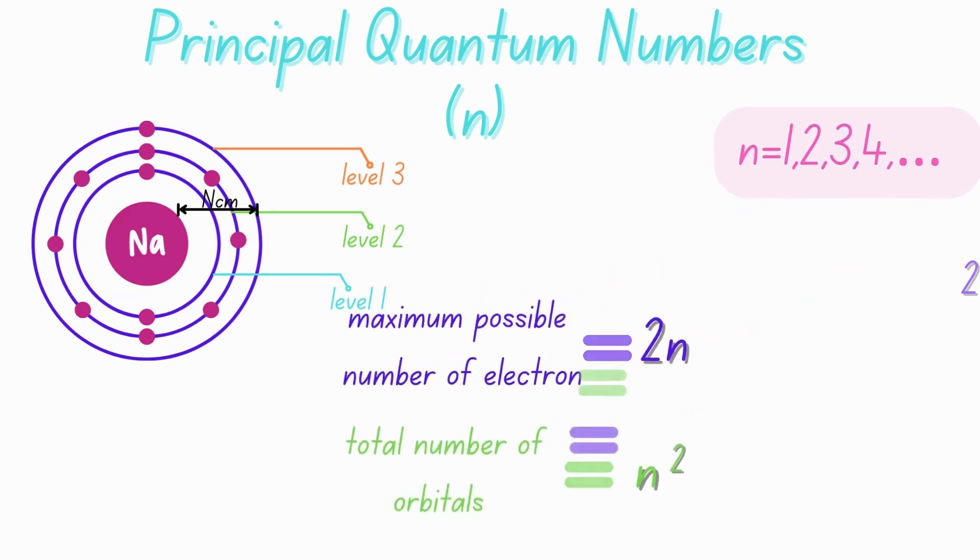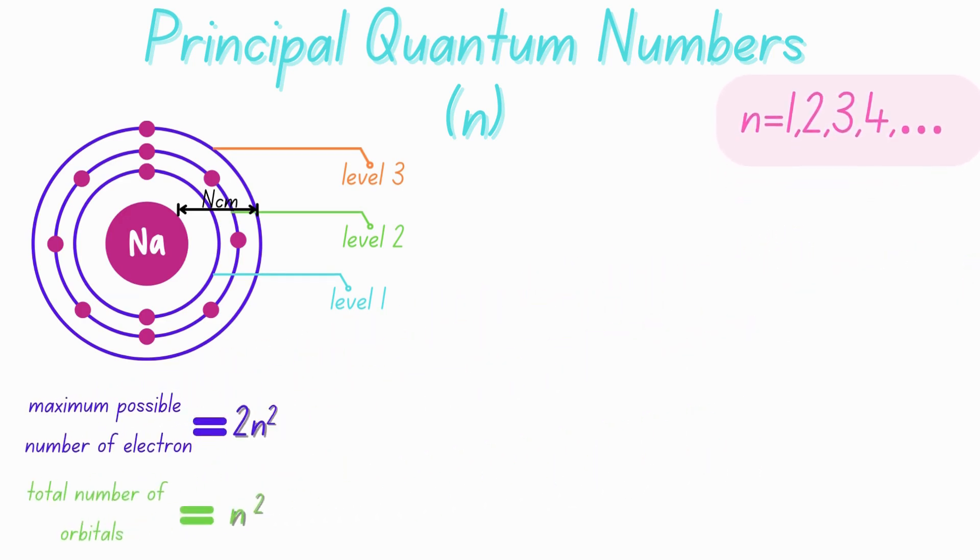So let's see how this actually plays out. If n is equal to one, the total number of orbitals will be one because one to the power of two is still one, and the total number of electrons will be two times one, so that is two electrons. If n is equal to two, we'll have four orbitals and eight electrons. If n is equal to three, we'll have nine orbitals and 18 electrons.